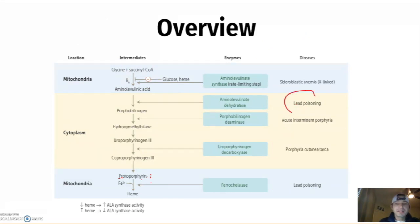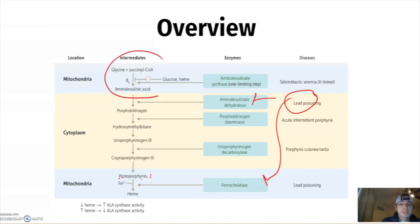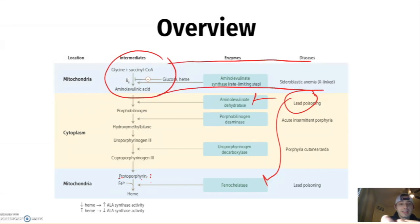When lead comes in, it inhibits ALA dehydratase and ferrochelatase. Sideroblastic anemia is X-linked and it interferes with heme synthesis here — it can be caused by a vitamin B6 deficiency, which is why that region of the pathway is affected in sideroblastic anemia.